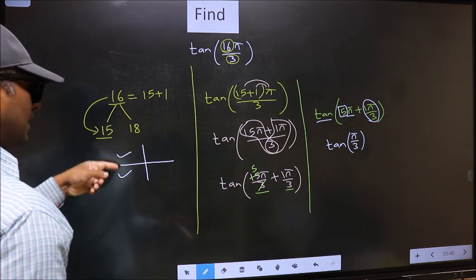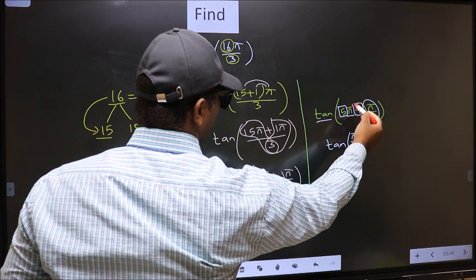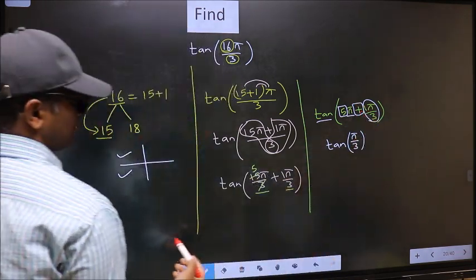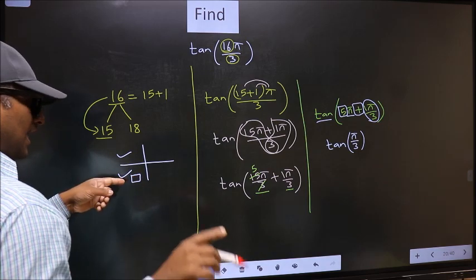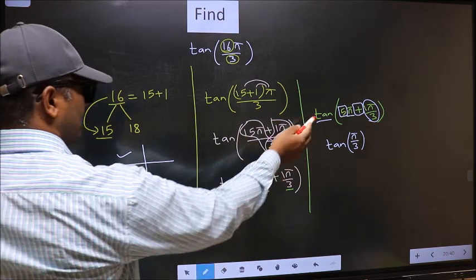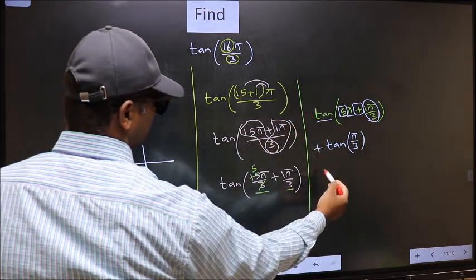So, now to select the quadrant, we should look at this symbol. Here we have plus. That means angle lies in the third quadrant. And in the third quadrant, tan is positive. So, we should put plus.